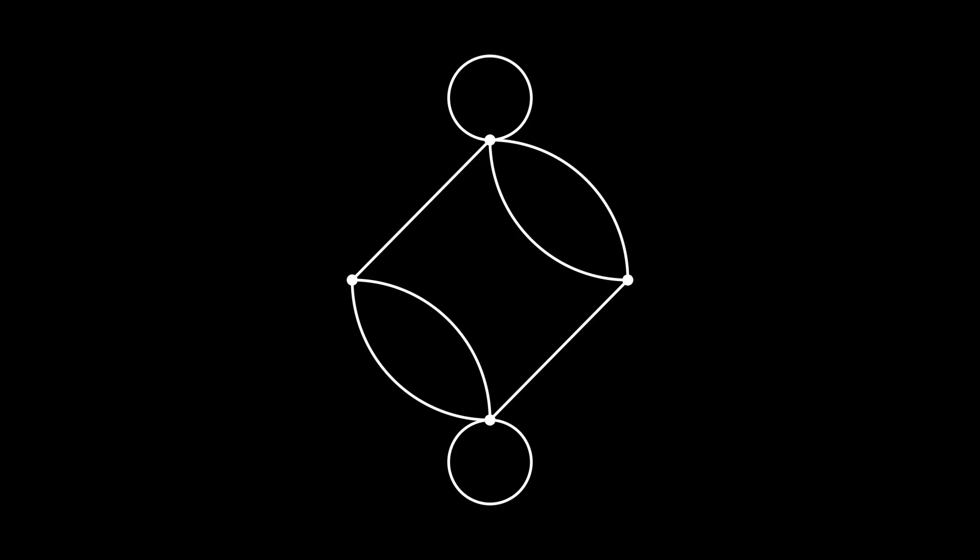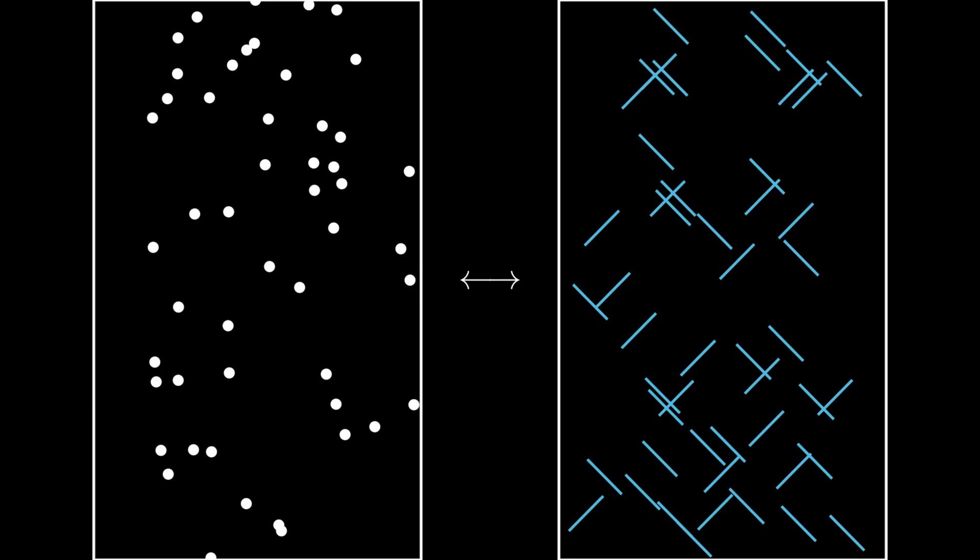A better way to deal with this problem is to have the edge set be a completely different set, untethered by the vertex set. From this, we get the half-edge definition of a graph.